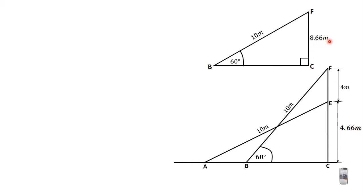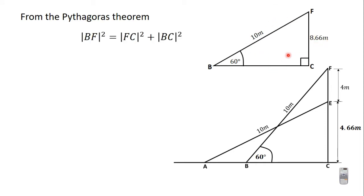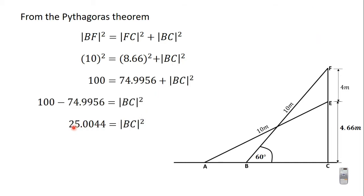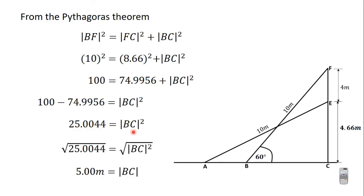Applying the Pythagorean theorem on this right angle triangle: BF² = FC² + BC². BF is 10 meters, so 10² = 8.66² + BC². Simplifying gives 25.0044 = BC². Taking the square root of both sides, BC = 5.00 meters, corrected to three significant figures.